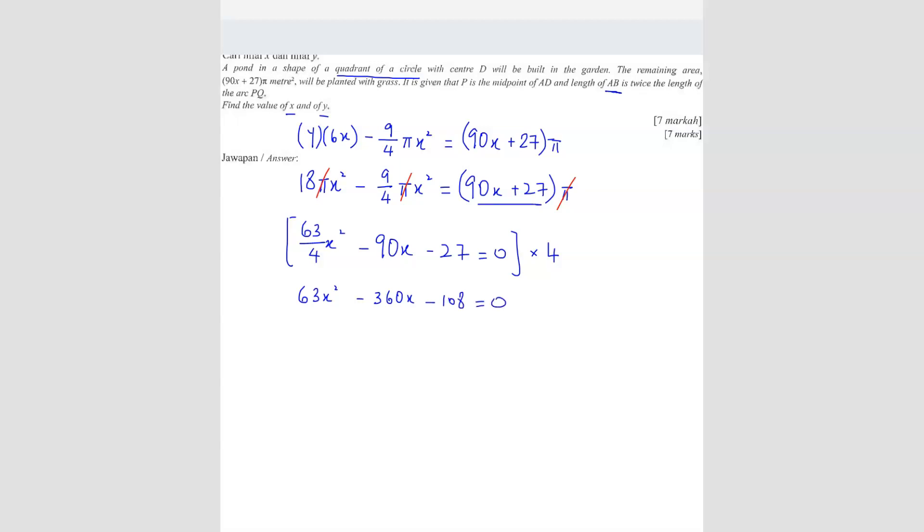So you can actually straight away just factorize here. You will get two brackets. But to make it proper, of course, you can simplify first, divide the whole thing by 9. But in this case, I'm not going to do that. So straight away, I factorize, I get X minus 6 and 7X plus 2.